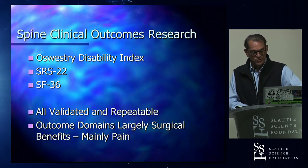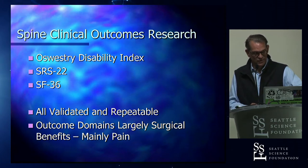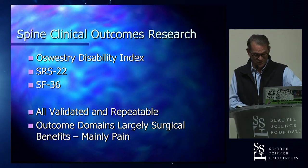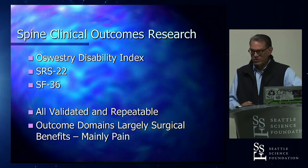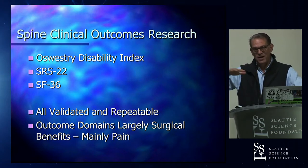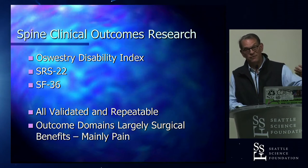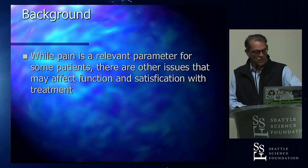Clinical outcomes research has really had a blind spot toward these ideas. All of the legacy outcome tools for spine — I'm listing three here: the Oswestry Disability Index, the SRS-22 for scoliosis, and the SF-36 or SF-12 — are all validated and repeatable, but most of the domains are aiming at demonstrating the benefits of what we do. We're not looking with these tools to measure negative impacts.